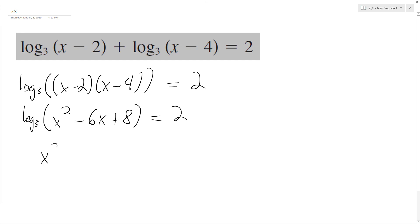So drop the log base 3, so we end up with x squared minus 6x plus 8 equals 3 squared.